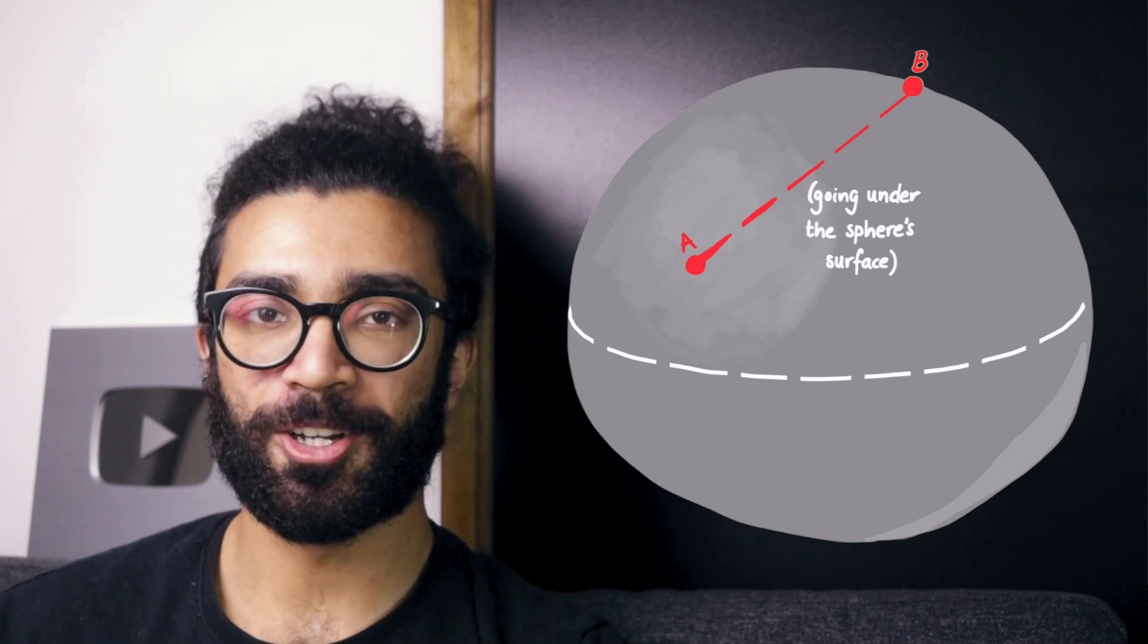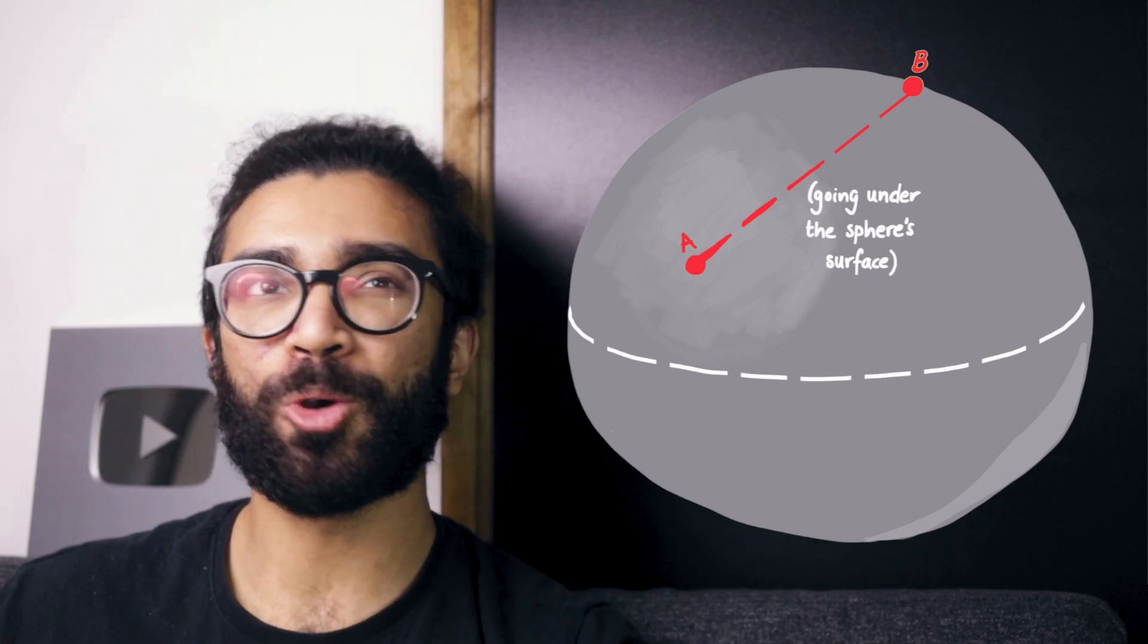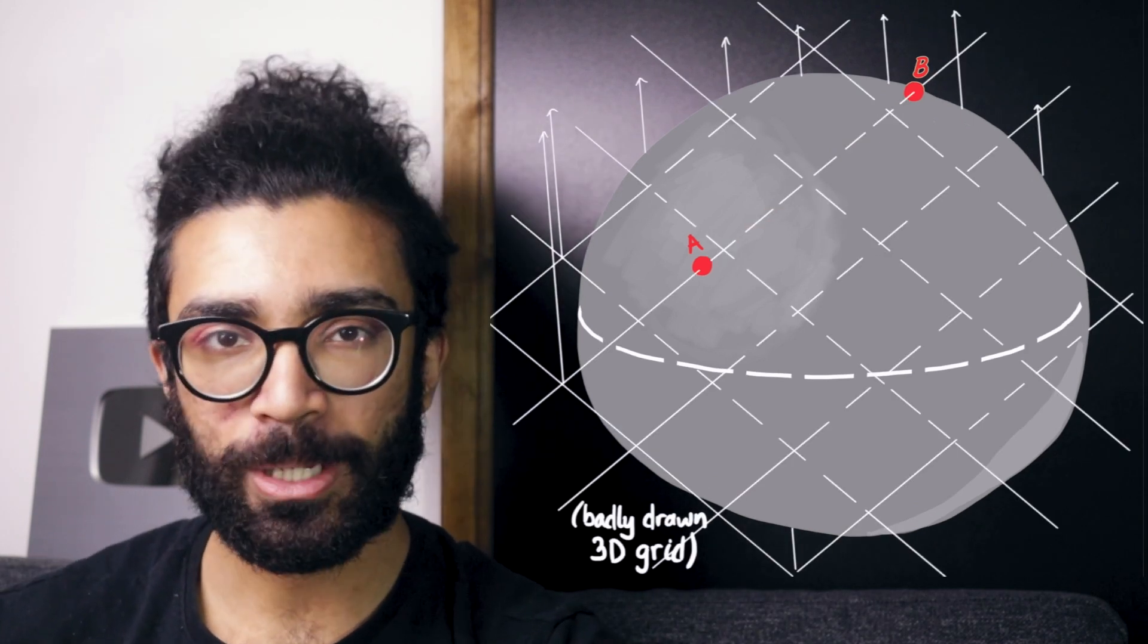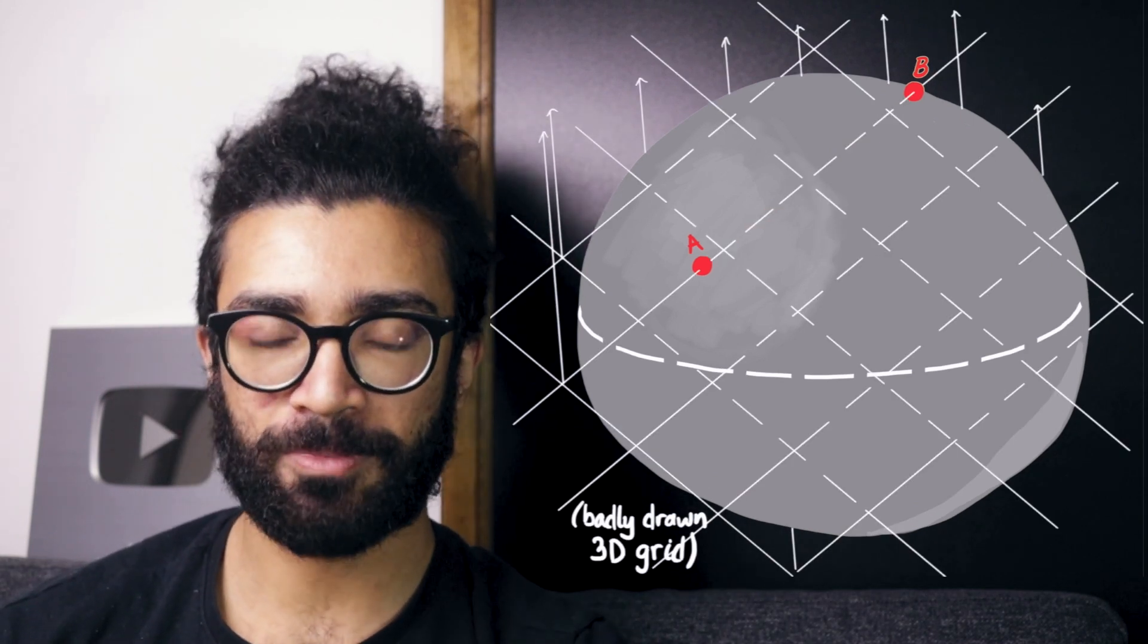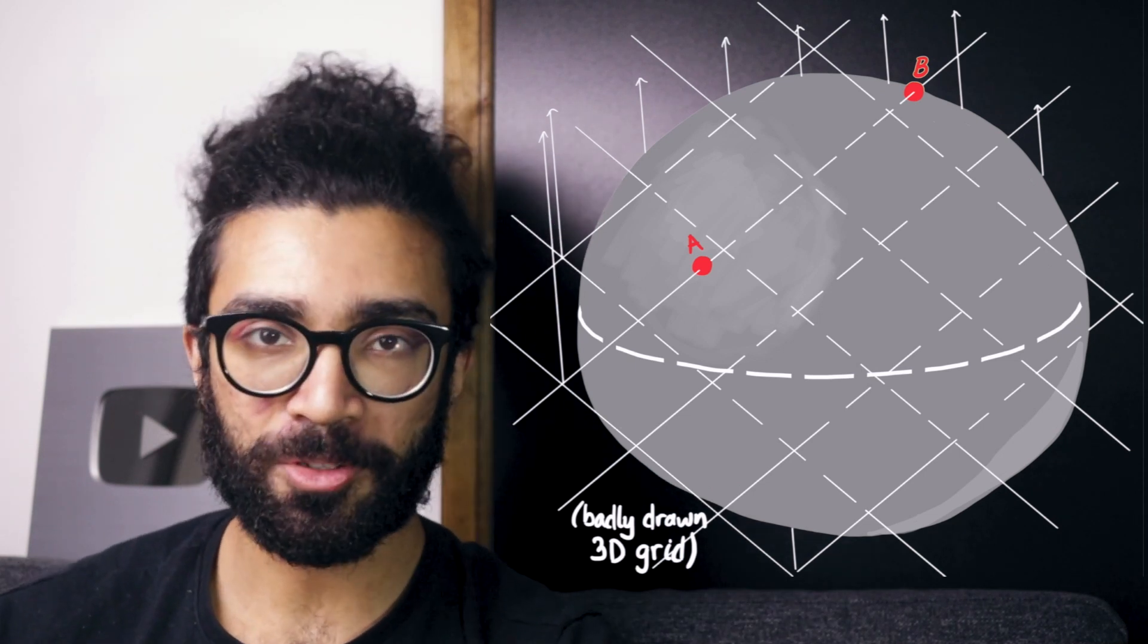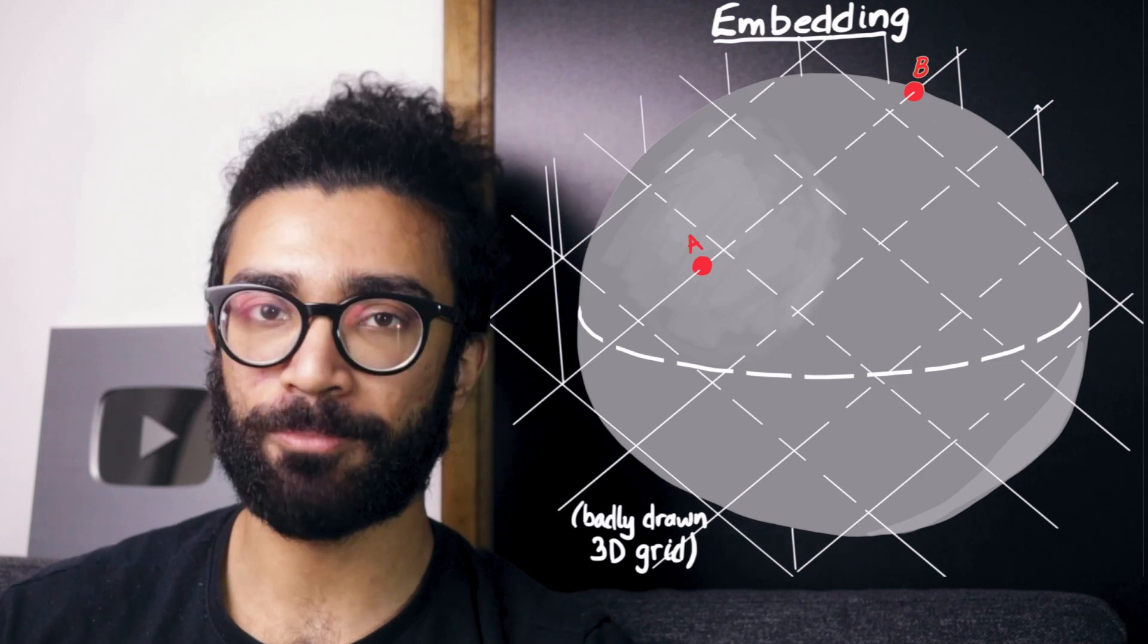The problem with this depiction though, is that it implicitly assumes that our sphere is somehow located in some three-dimensional space. This is the kind of space that we experience on a day-to-day basis, that we assume exists around us. And this idea where our two-dimensional sphere is located inside a three-dimensional space is known as embedding in relativity.